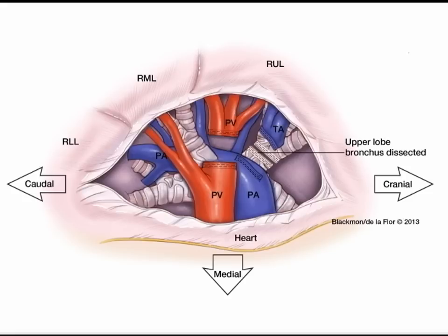Now you have divided all of your hilar structures going to the right upper lobe — the bronchus, the artery, and the vein. All that remains is the fissure, which is stapled from the utility port beginning anteriorly towards the posterior area and angling upwards to preserve the superior segment of the right lower lobe. Once the fissure has been divided, the specimen is placed into an endocatch bag and removed through the utility port.